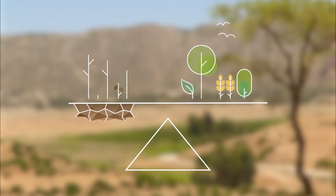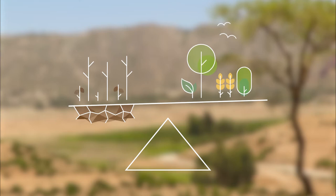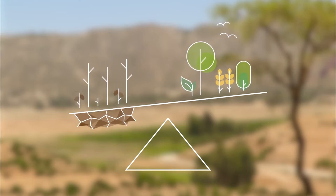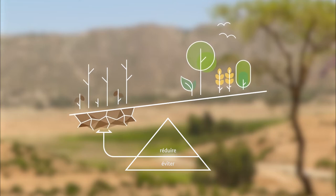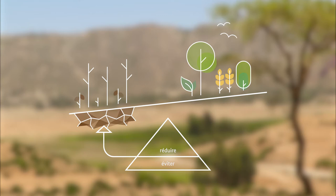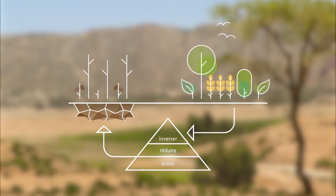Lorsqu'une utilisation projetée des terres est susceptible de les dégrader, des mesures pour éviter et réduire la dégradation anticipée sont prévues et mises en œuvre. La dégradation partielle, qui ne peut être totalement évitée, est alors compensée par la restauration et la réhabilitation.